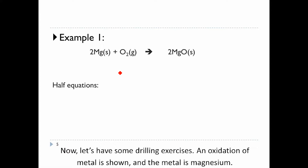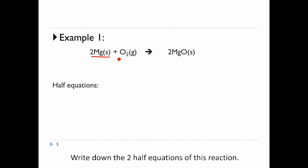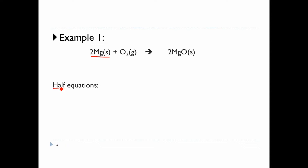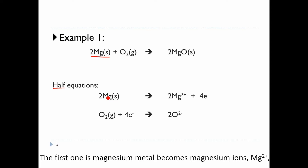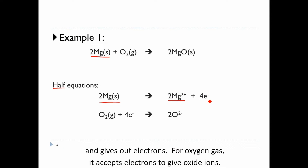Now let's have some drilling exercises. An oxidation of a metal is shown — the metal is magnesium. Write down the two half equations of this reaction. The first one is magnesium metal becoming magnesium ions, Mg2+, and giving out electrons.